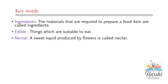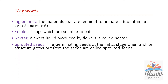Edible parts. Nectar: a sweet liquid produced by flowers is called nectar. Honey bees collect nectar from the flowers to make honey. Sprouted seeds: the germinating seeds at the initial stage, when a root structure grows out from the seeds, are called sprouted seeds.